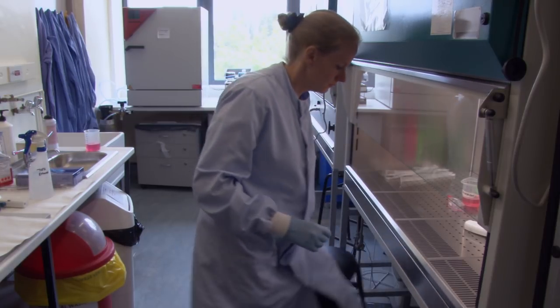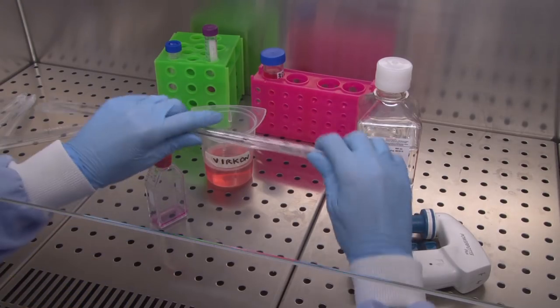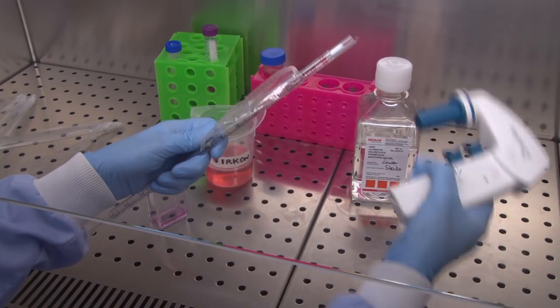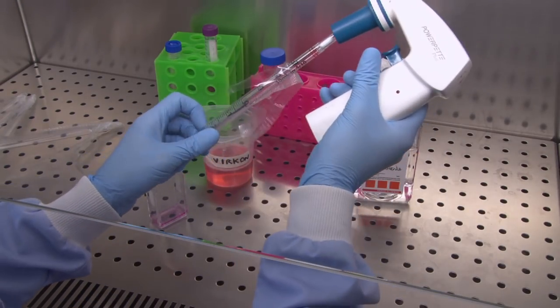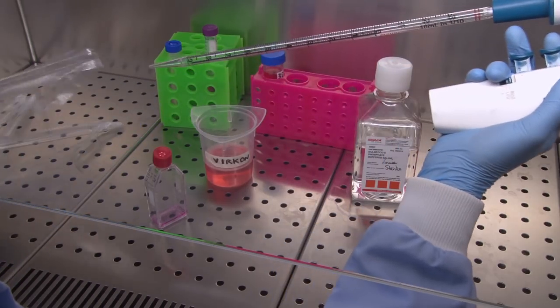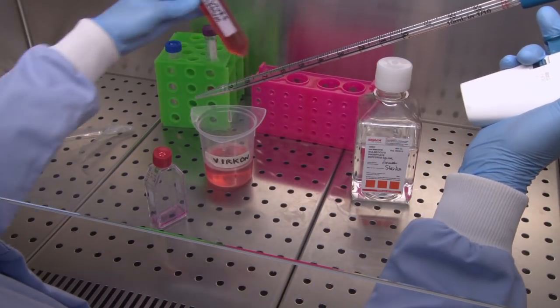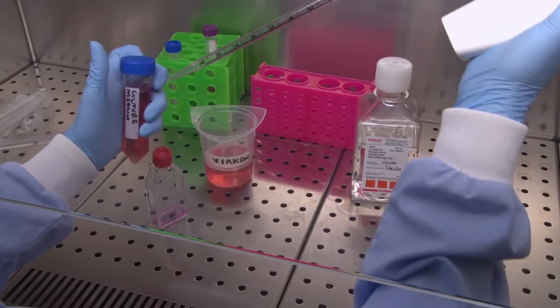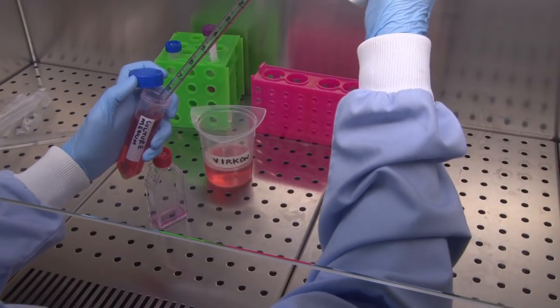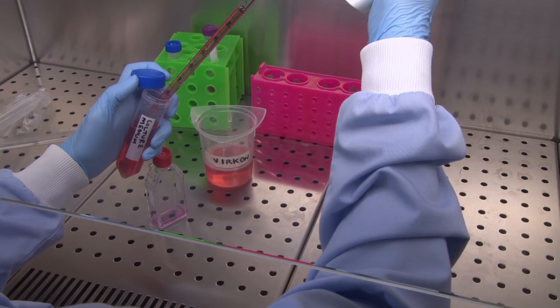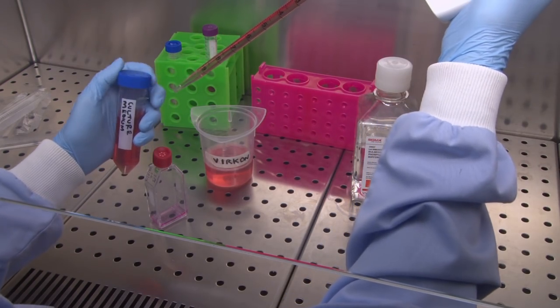To arrest the trypsinization, and prevent damage to the cells, we add fresh culture medium, which provides lots of protein to mop up the trypsin. Take a pipette and open the container using one hand. Fill the pipette and pour the fresh medium down the back wall of the flask, which washes the cells to the bottom.